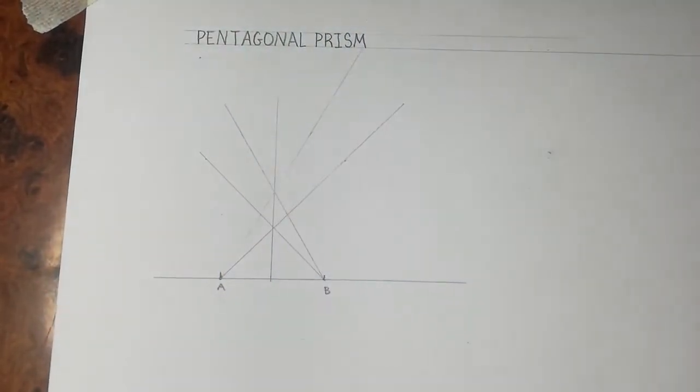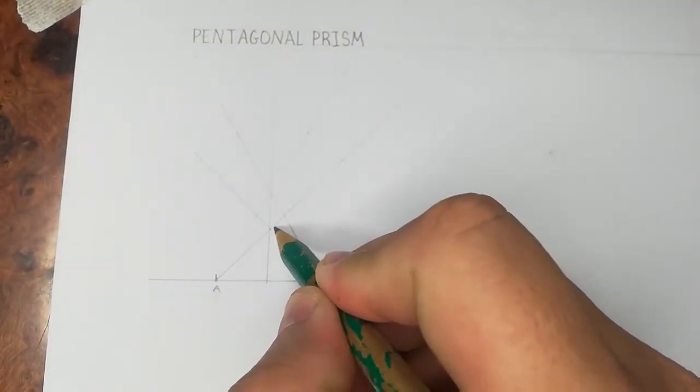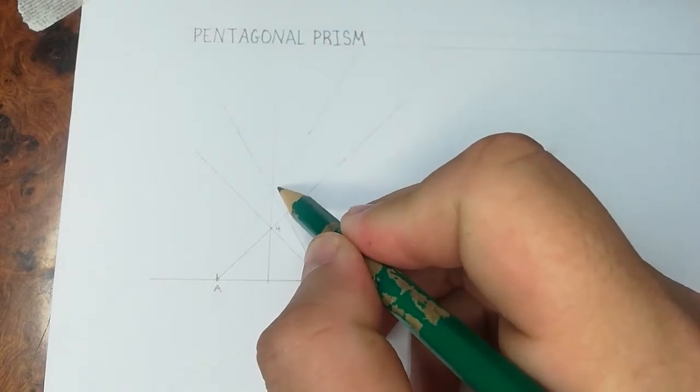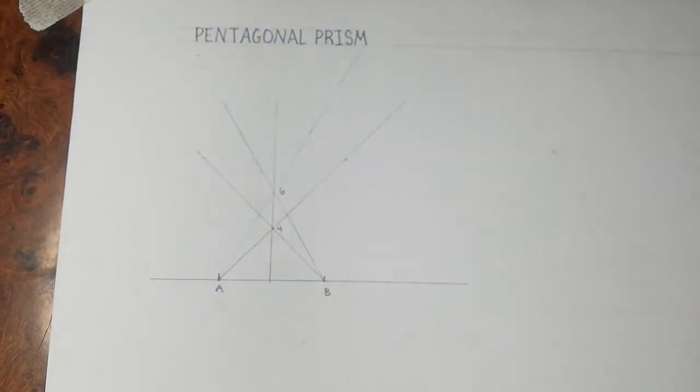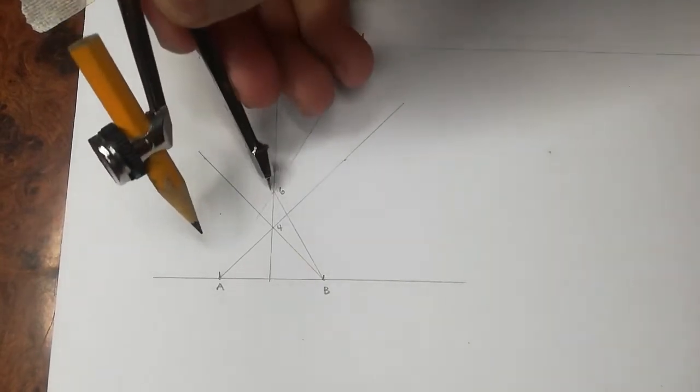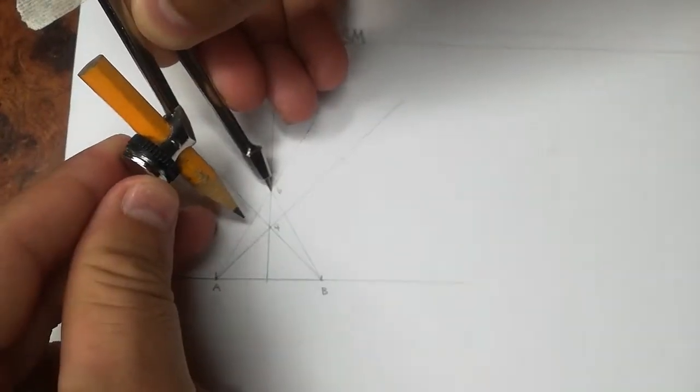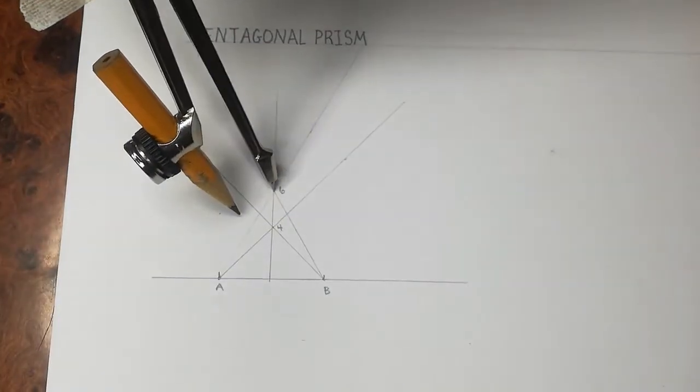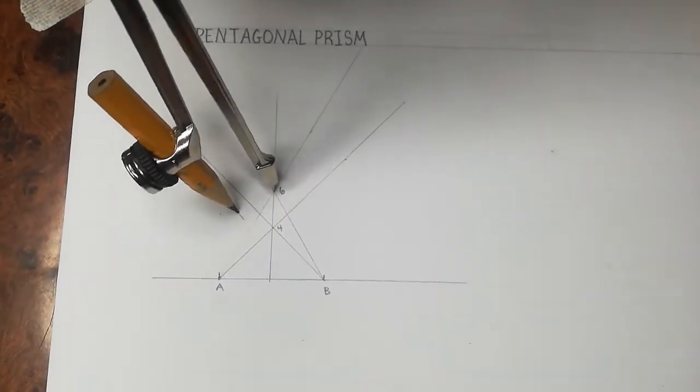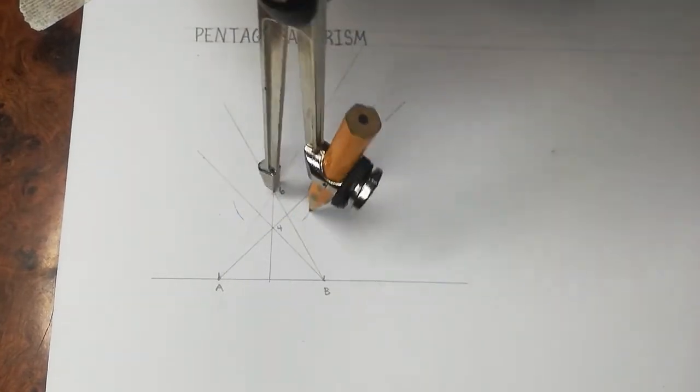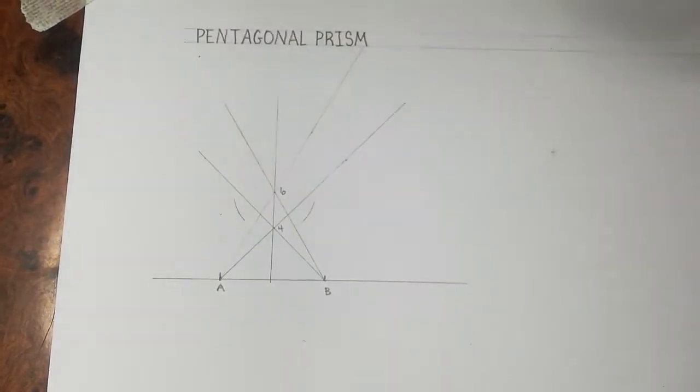Wherever the 45 degrees lines intersect, we will call 4. Wherever the 60 degrees lines intersect, we will call 6. Why 4 and why 6? Because if we were to draw a circle from 4 to E, 4 being the center, we would draw a circle that would produce a 4-sided figure. If we were to draw a circle from center 6 to E, we would draw a circle that would produce a 6-sided figure.